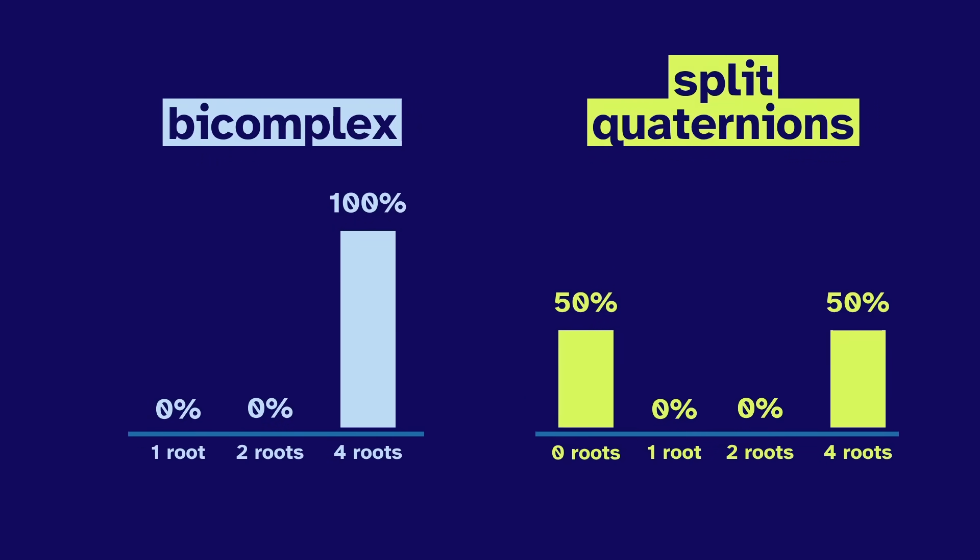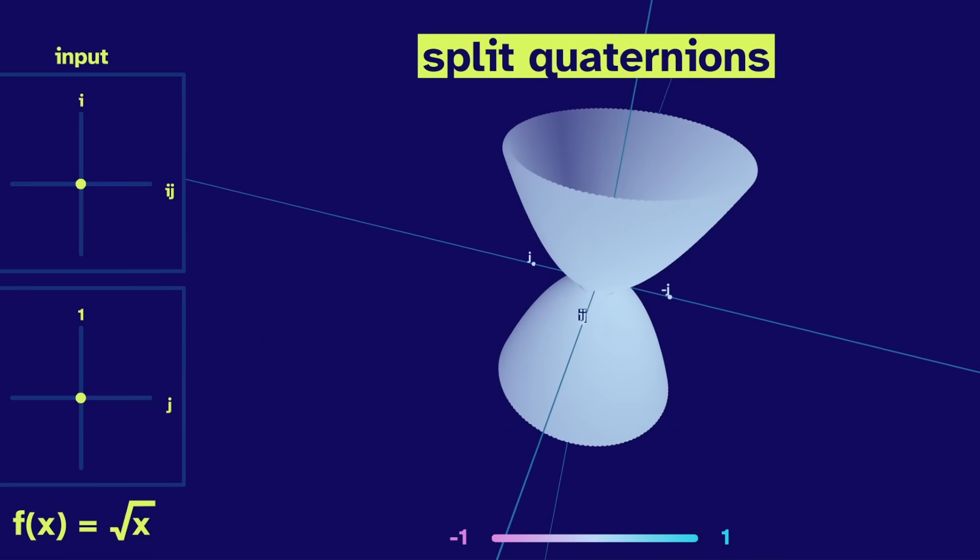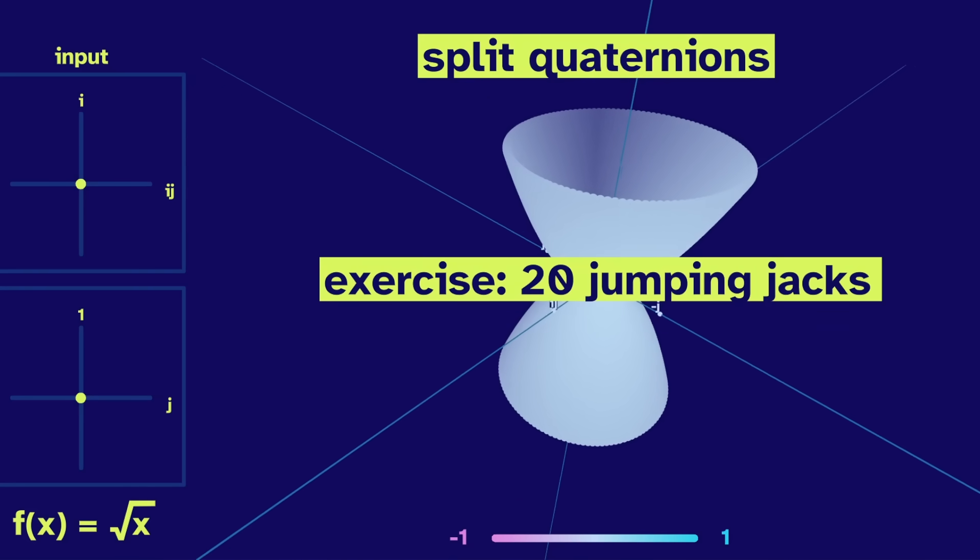Although, interestingly, the split quaternions have a small amount with infinite roots. The roots of zero form this paraboloid. As an exercise, 20 jumping jacks. One, two, three.